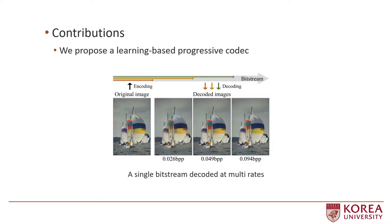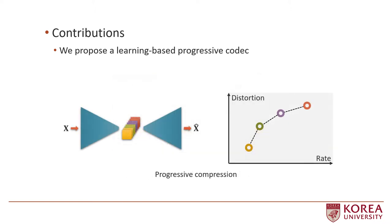The proposed DEPICT encodes an image into a single bit stream that can be decoded at various bit lengths.